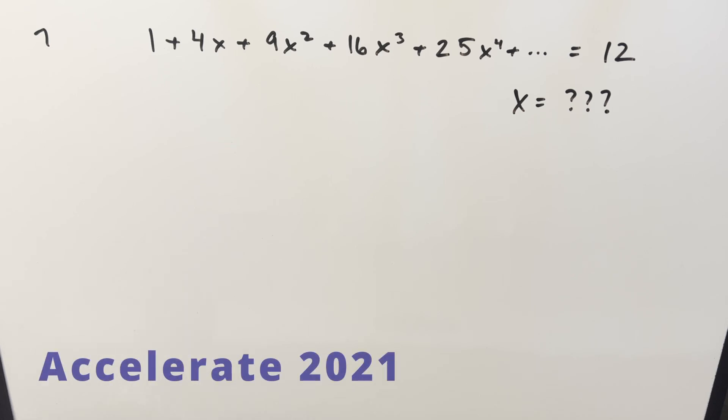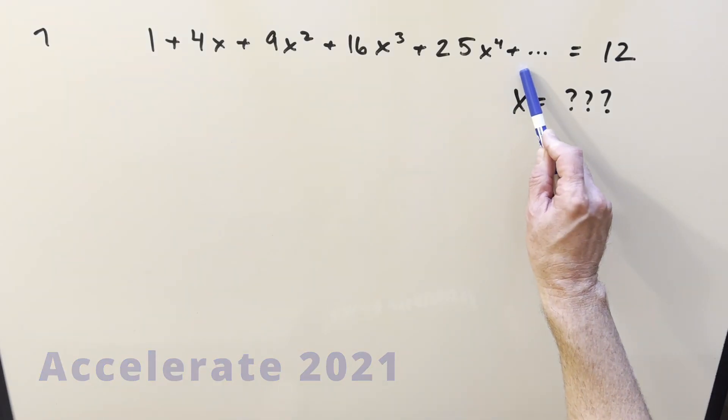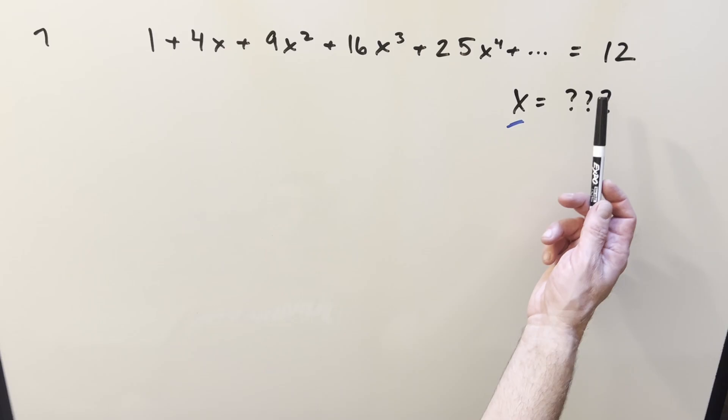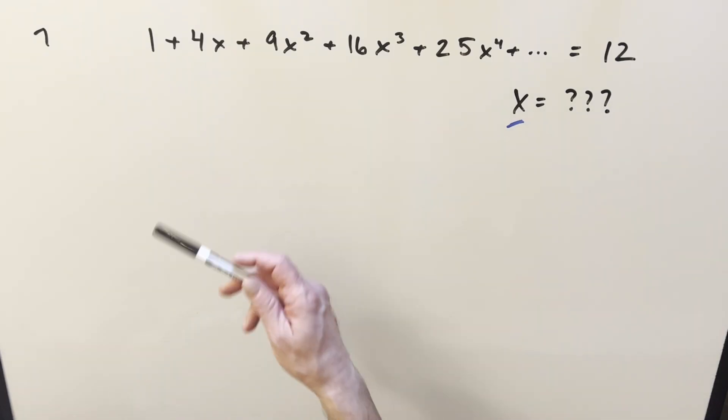Okay, we are going to take a problem from Accelerate 2021, problem number 7. We have the sum of 1 plus 4x plus 9x squared plus 16x cubed plus 25x to the 4th, on and on to infinity, and this whole thing equals 12, and we just need to find a value for x. This was pretty interesting because at first when I looked at it, I'm like, how can this whole thing be 12 if we're going to infinity? It seems like it's going to diverge or something.